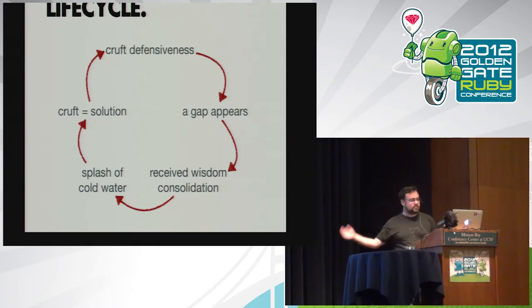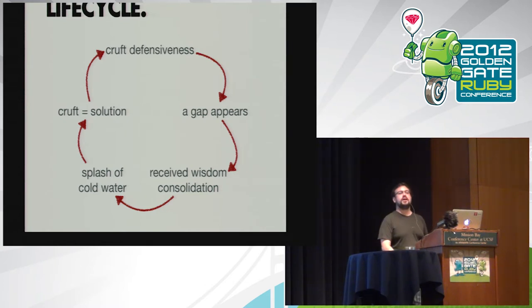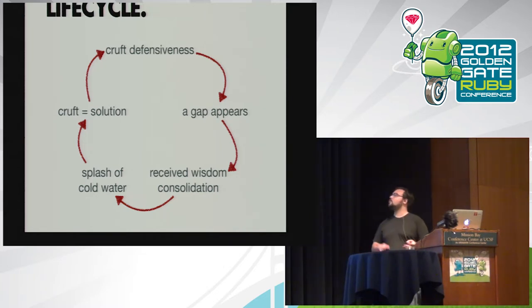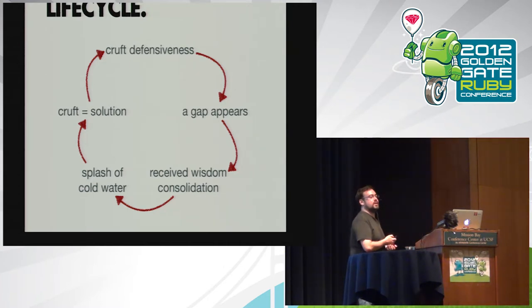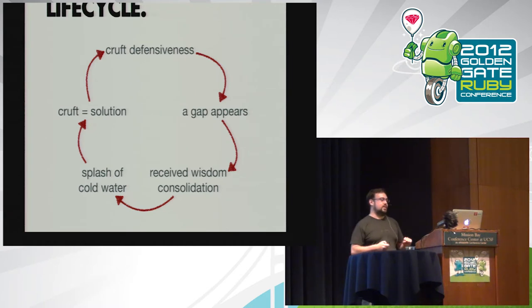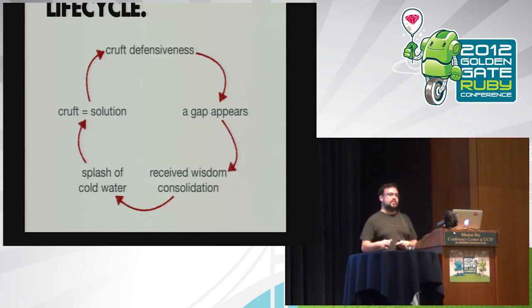So what's the lifecycle of a project? In the beginning, the cruft is a real solution — it matches one-to-one with the assumption that goes into it. Over time, you develop cruft defensiveness: 'I don't know why we put that there, but it was probably there for a reason' — or hopefully better yet, 'that's there for IE, that's an IE fix.' But over time a gap appears. Unfortunately, the gap usually grows before it becomes really pressing that you deal with it. The received wisdom gets consolidated, and no matter how big the gap gets, the project always has an excuse for why this is happening. The ecosystem circles the wagons. That happened with jQuery and Zepto.